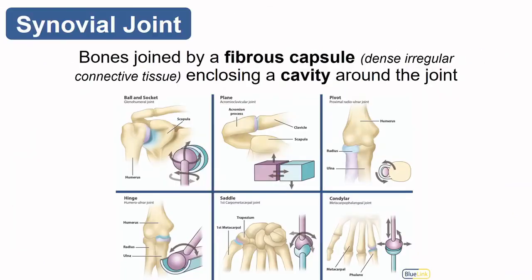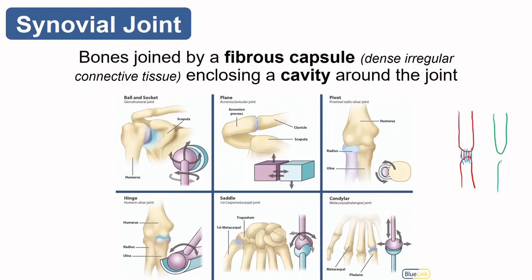Synovial joints are joined by a fibrous capsule that encloses a cavity. Unlike fibrous joints with fibrous tissue connecting bones, or cartilaginous joints with cartilage binding them, a synovial joint is bound by fibrous tissue but the space remains open and full of fluid. We spend a lot of time on synovial joints because they are the most numerous in the body and also the most mobile, making them more prone to injury.